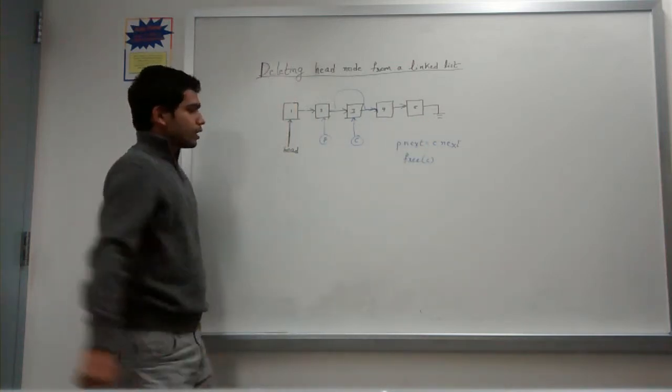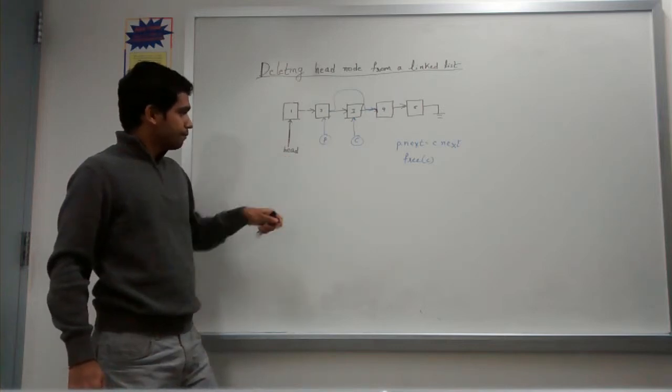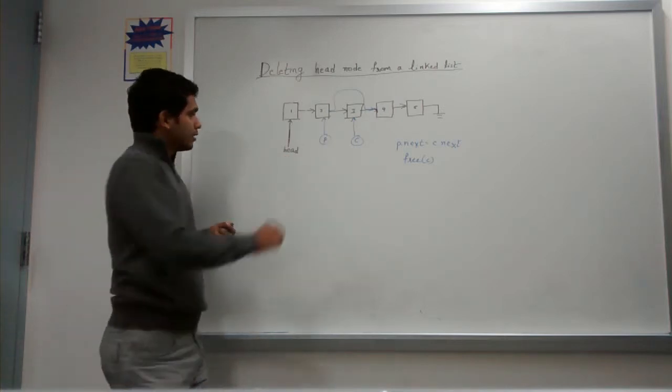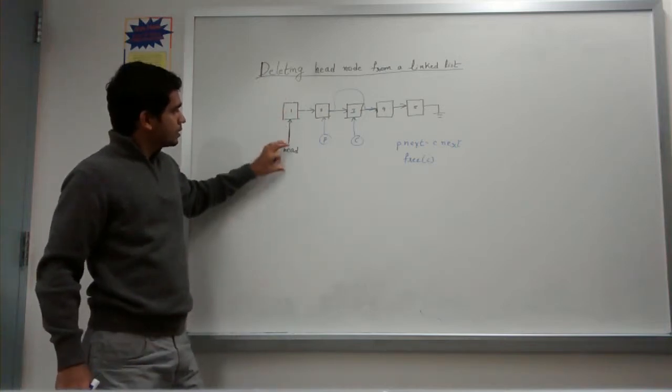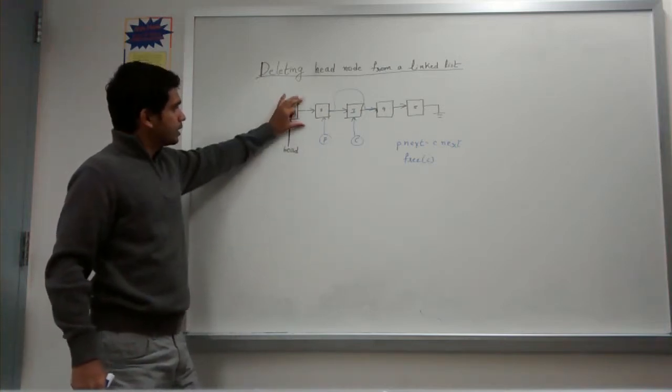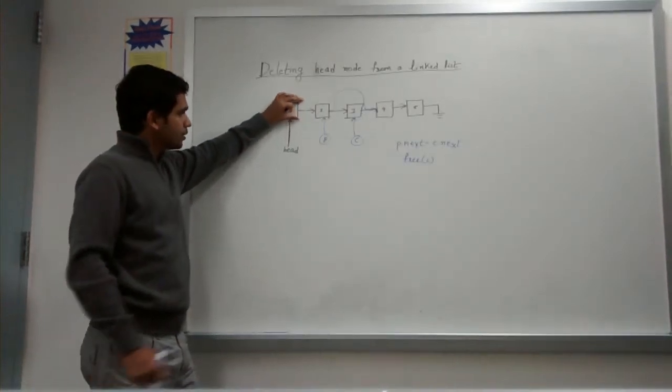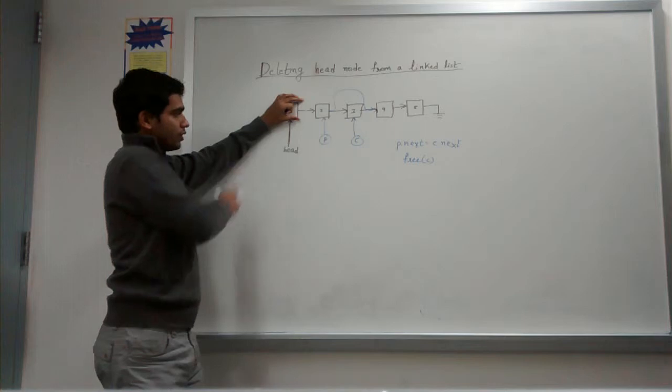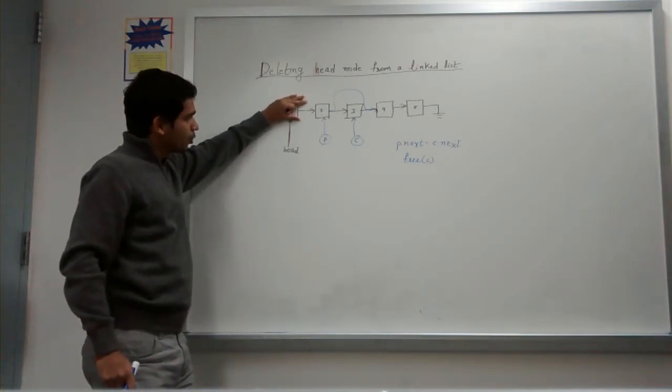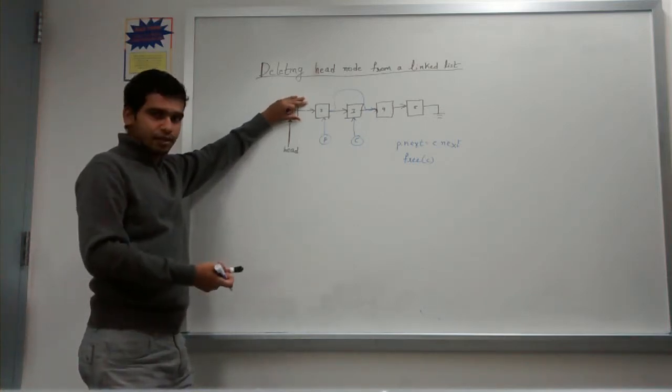And let us go back to the other end which is deletion of the head. Now head is a little tricky because there is no previous. So you might say that hey, why don't I just delete free head saying deleting this node. But the problem is the gate of your linked list, the entry pointer for linked list which is the head pointer is now pointing to a dangle. It's not pointing to anything, it's pointing to a garbage value.